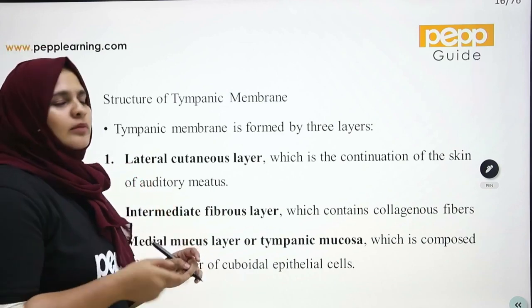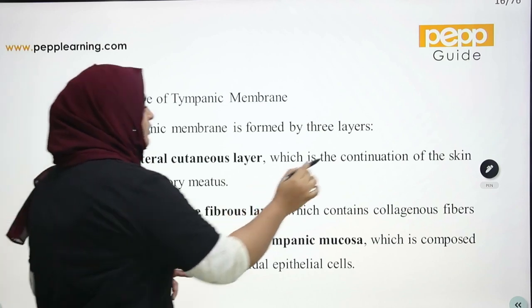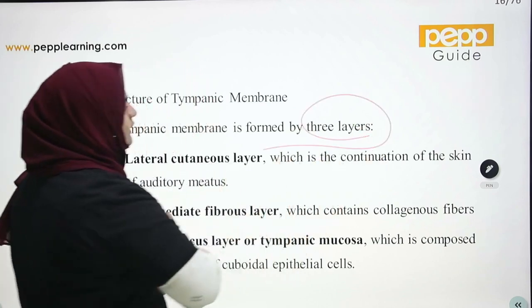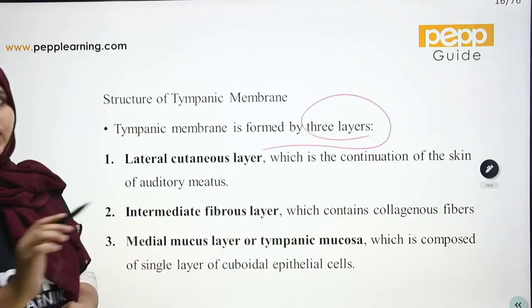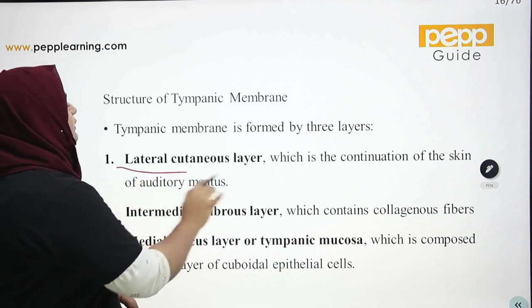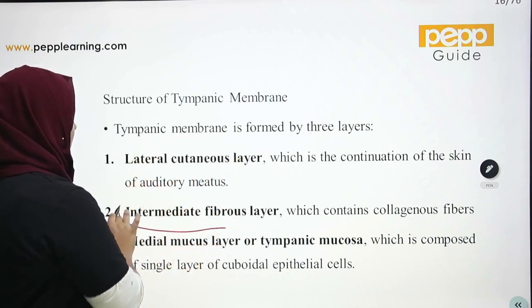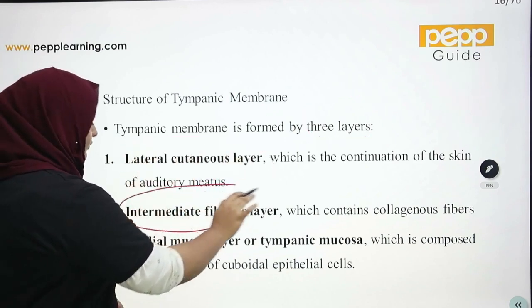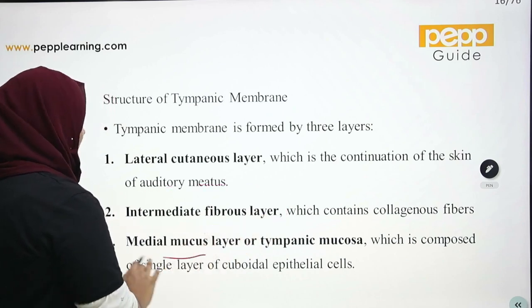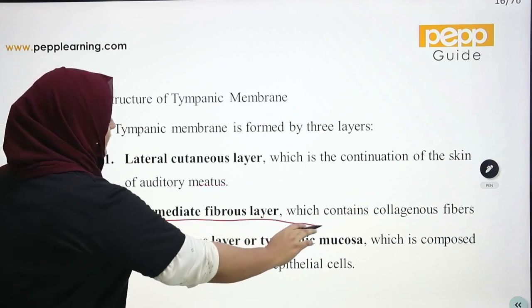The tympanic membrane has three layers: the lateral cutaneous layer, the intermediate fibrous layer, and the medial mucous layer.